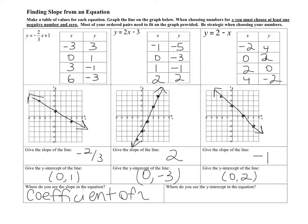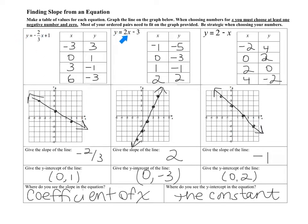And if we take a look at the y-intercept in the equation — the y-intercept here was (0, 1), it's right there in the equation. Here it was negative 3, right there in the equation. Here it's 2, right there in the equation. And what is that number called? That number is called the constant. So the y-intercept is the constant. That's really important information. Whenever you have an equation in y-equals form, we call this slope-intercept form, and the slope is always the coefficient of x, and the y-intercept is always your constant.